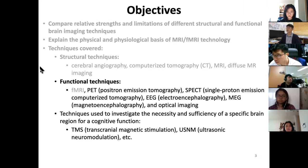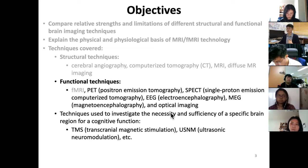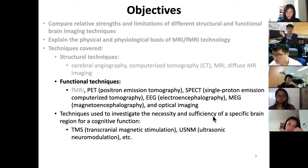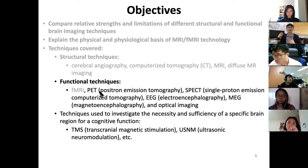Today we will continue with functional imaging techniques including PET, SPECT, EEG, MEG, and optical imaging. These techniques can be used to investigate the necessity and sufficiency of a specific brain region connected to a specific brain function. At the end, I will also cover emerging techniques such as transcranial magnetic stimulation and ultrasound neuromodulation.